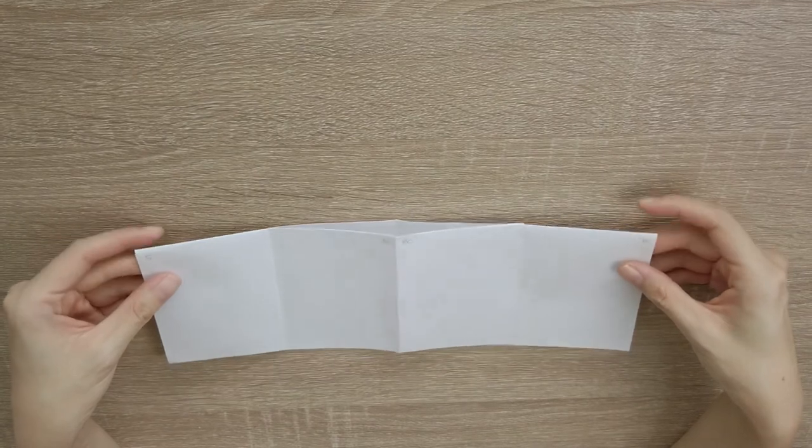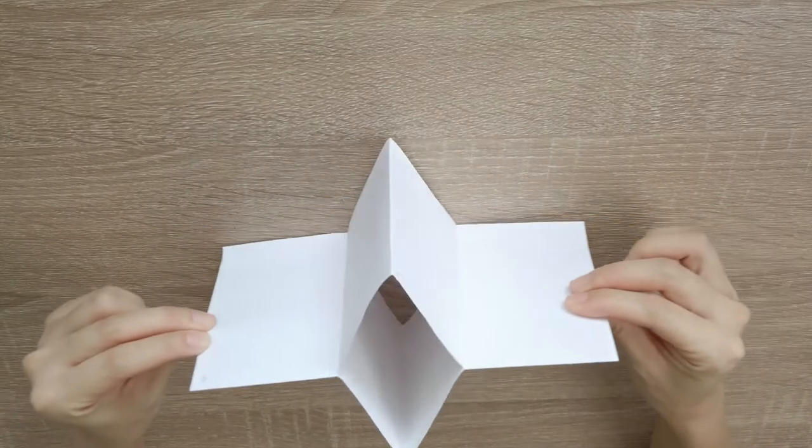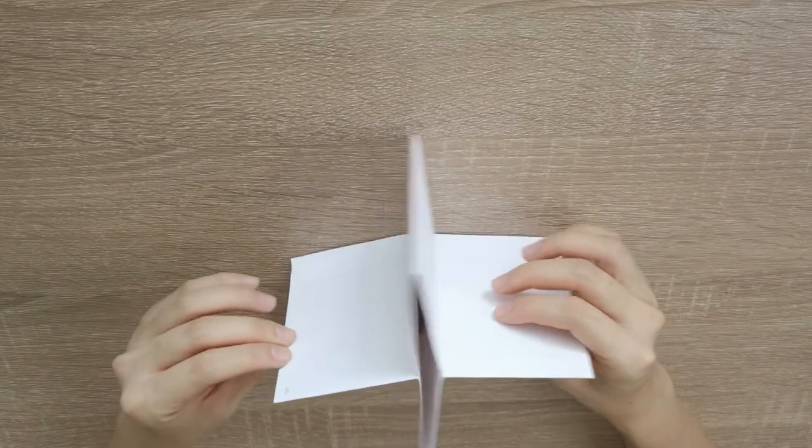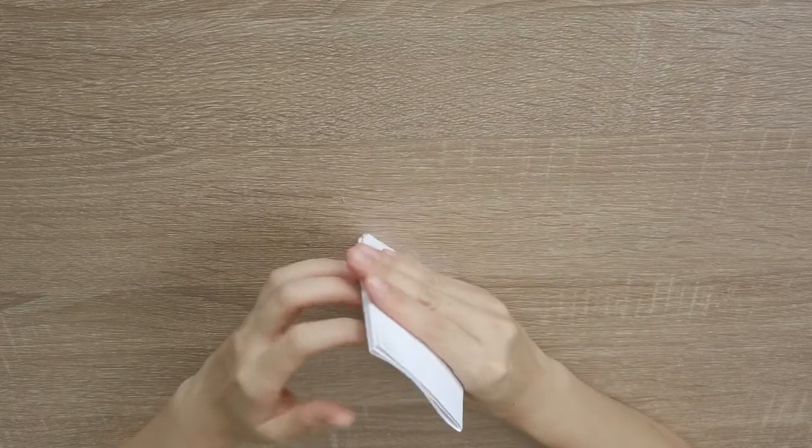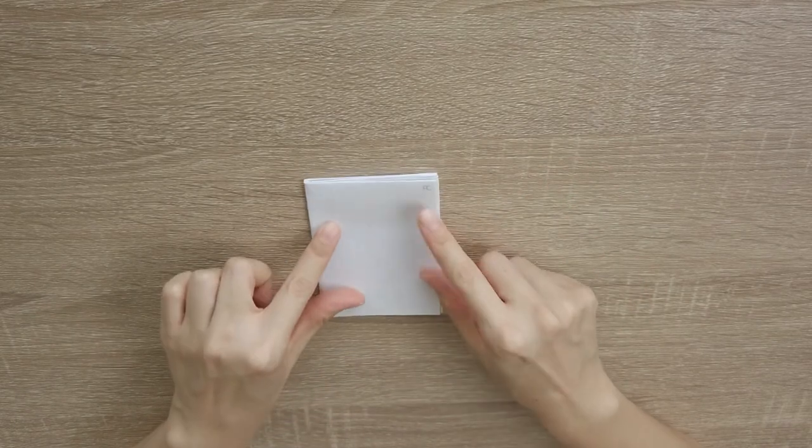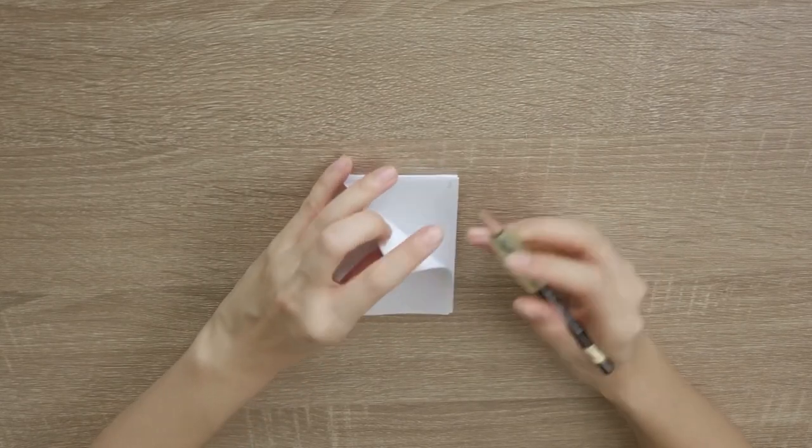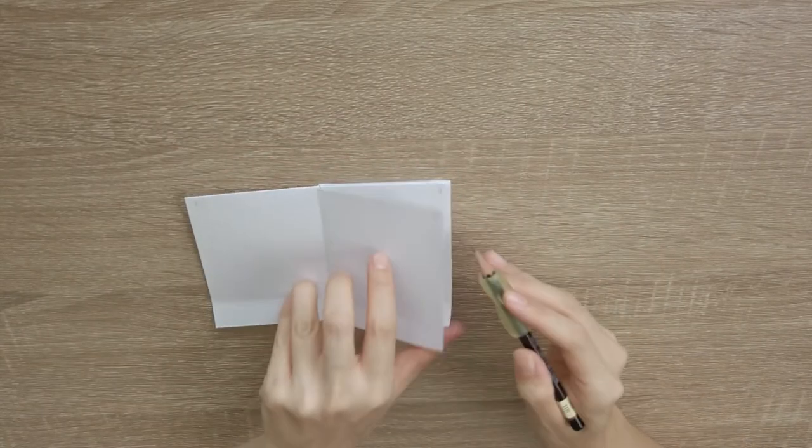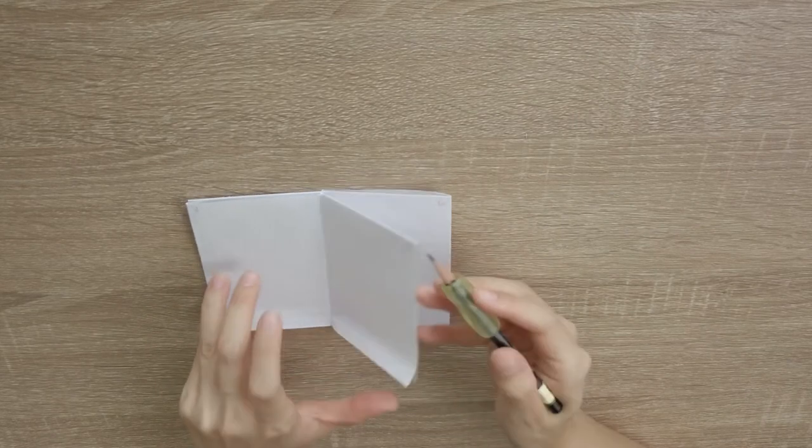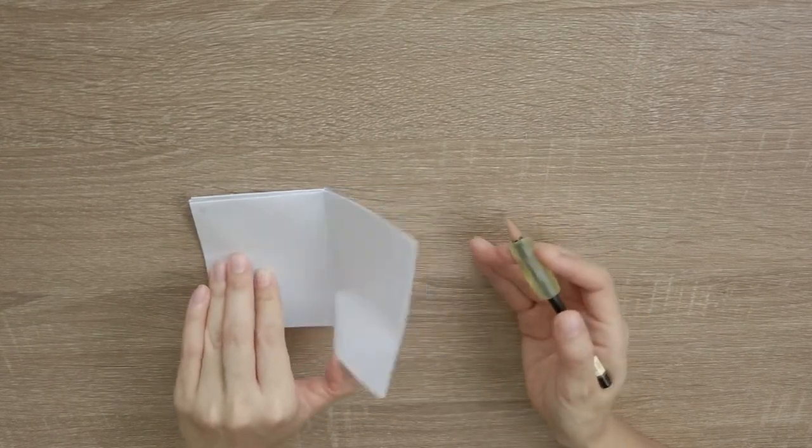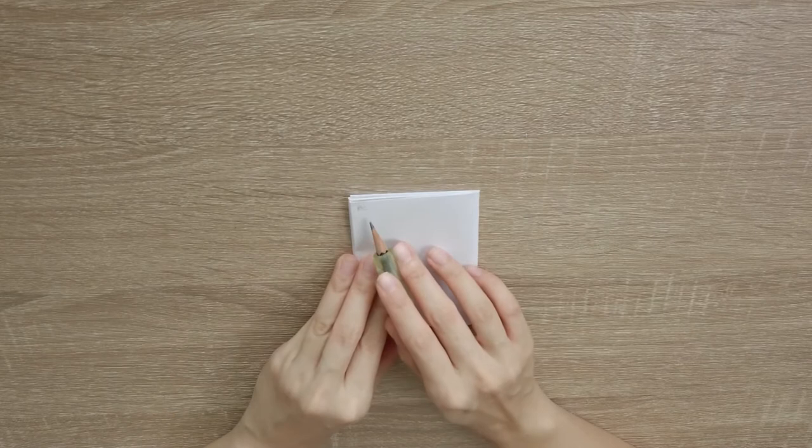Fold it in half lengthwise. And then these two go like that. And then they fold this way. And then what I found very helpful was to then label each page. So I have the front cover here. And then I have one, two, three, four, five, six. So you're going to have six pages. And then you have your back cover here.